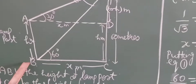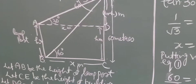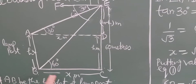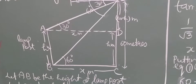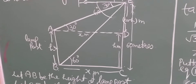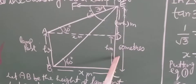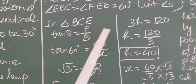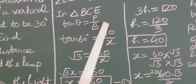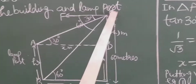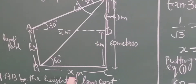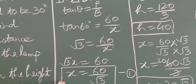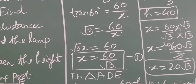Now let us take triangles and trigonometric ratios to solve the question. First I am going to take triangle BCE. CE is given to us so we can easily calculate BC. BCE is a right angle triangle with angle C equal to 90 degree. In triangle BCE, tan60° equals perpendicular upon base, so tan60° equals 60 upon x. The value of tan60° is root 3, so root 3 x equals 60, giving x equals 60 upon root 3. This is equation number 1.